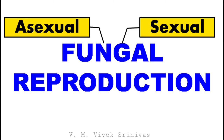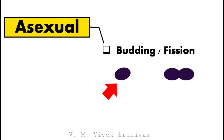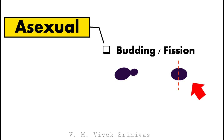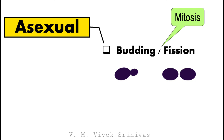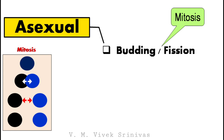Fungal Reproduction. Unlike other microorganisms, in fungi both asexual reproduction and sexual reproduction are seen. Asexual reproduction occurs by budding or by fission. In budding, progeny cells bud off from the parent cell. In fission, a fissure is created in the middle and the two cells separate. This happens by mitosis — from a single cell, two cells are formed. As a result of asexual reproduction, asexual spores are produced.